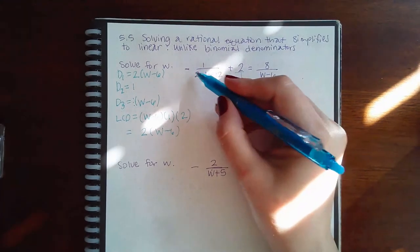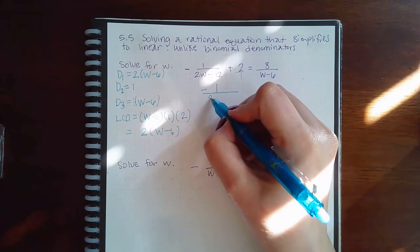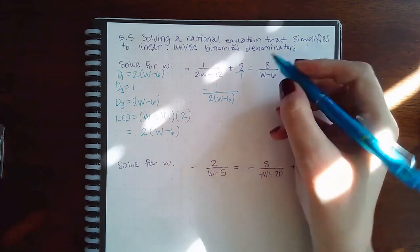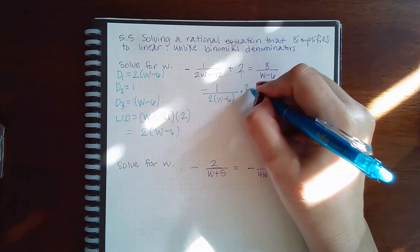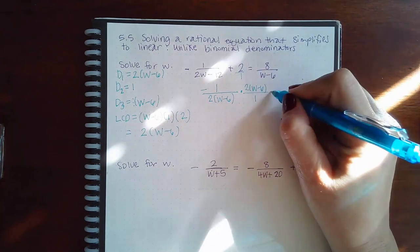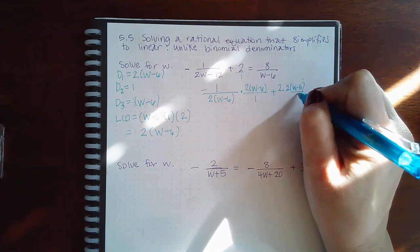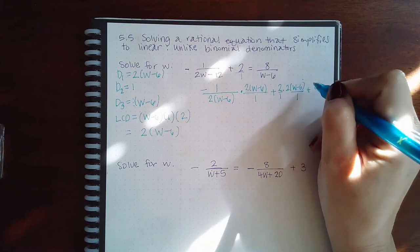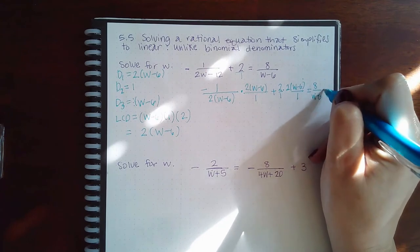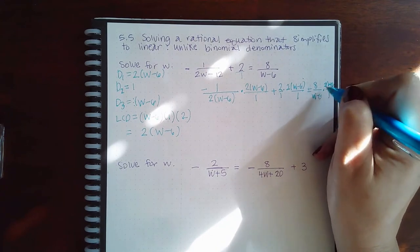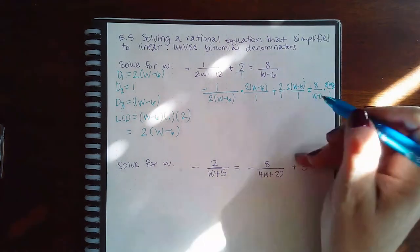So what I'm going to do is I'm going to rewrite this fraction, but I am going to use the factored version of this denominator. So the factored version was 2 times W minus 6. And when I do that, I have to multiply by the LCD over 1 times the LCD over 1 plus, equals times the LCD over 1. I'm running out of space there, but that is 2W minus 6 over 1.